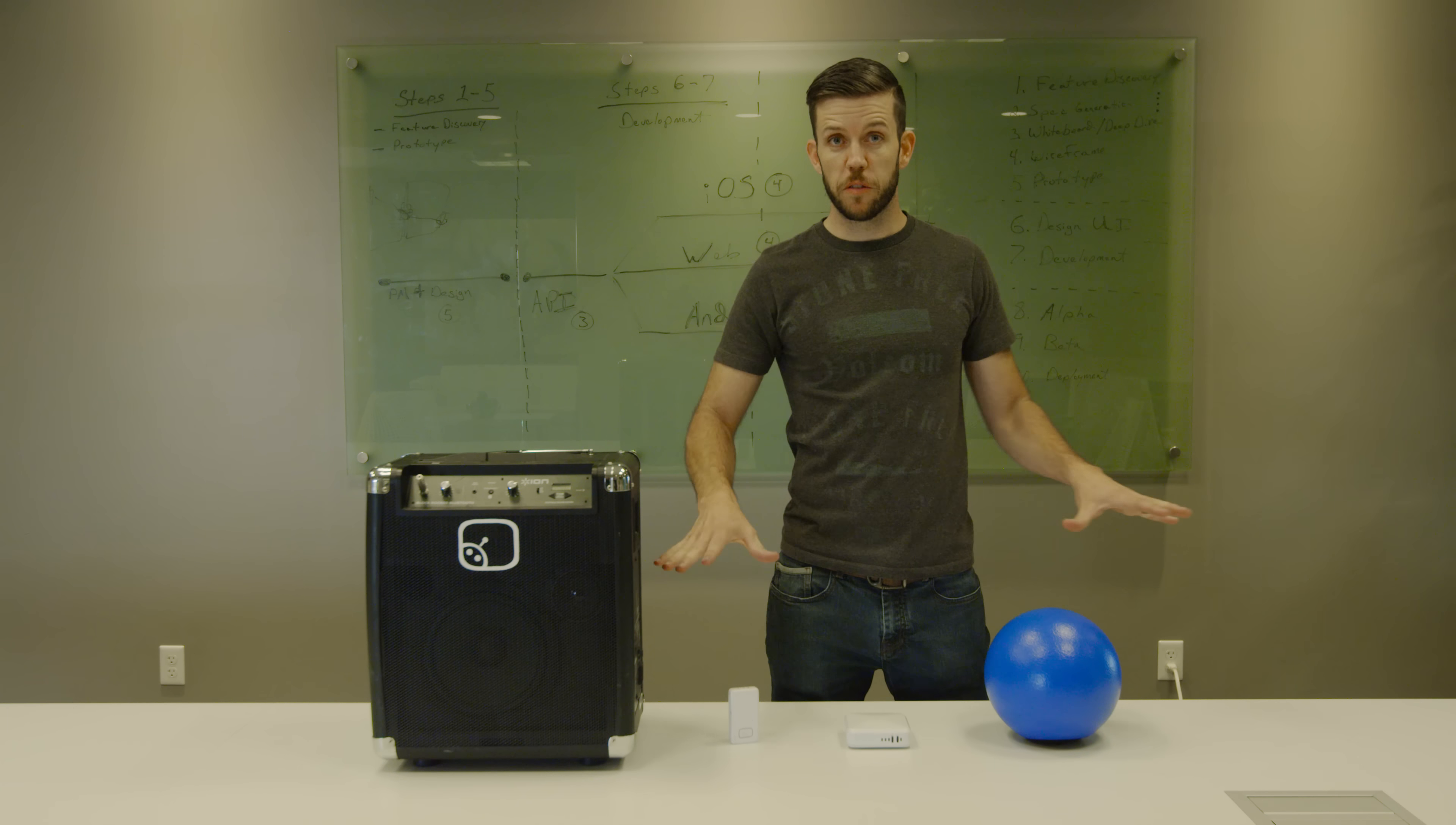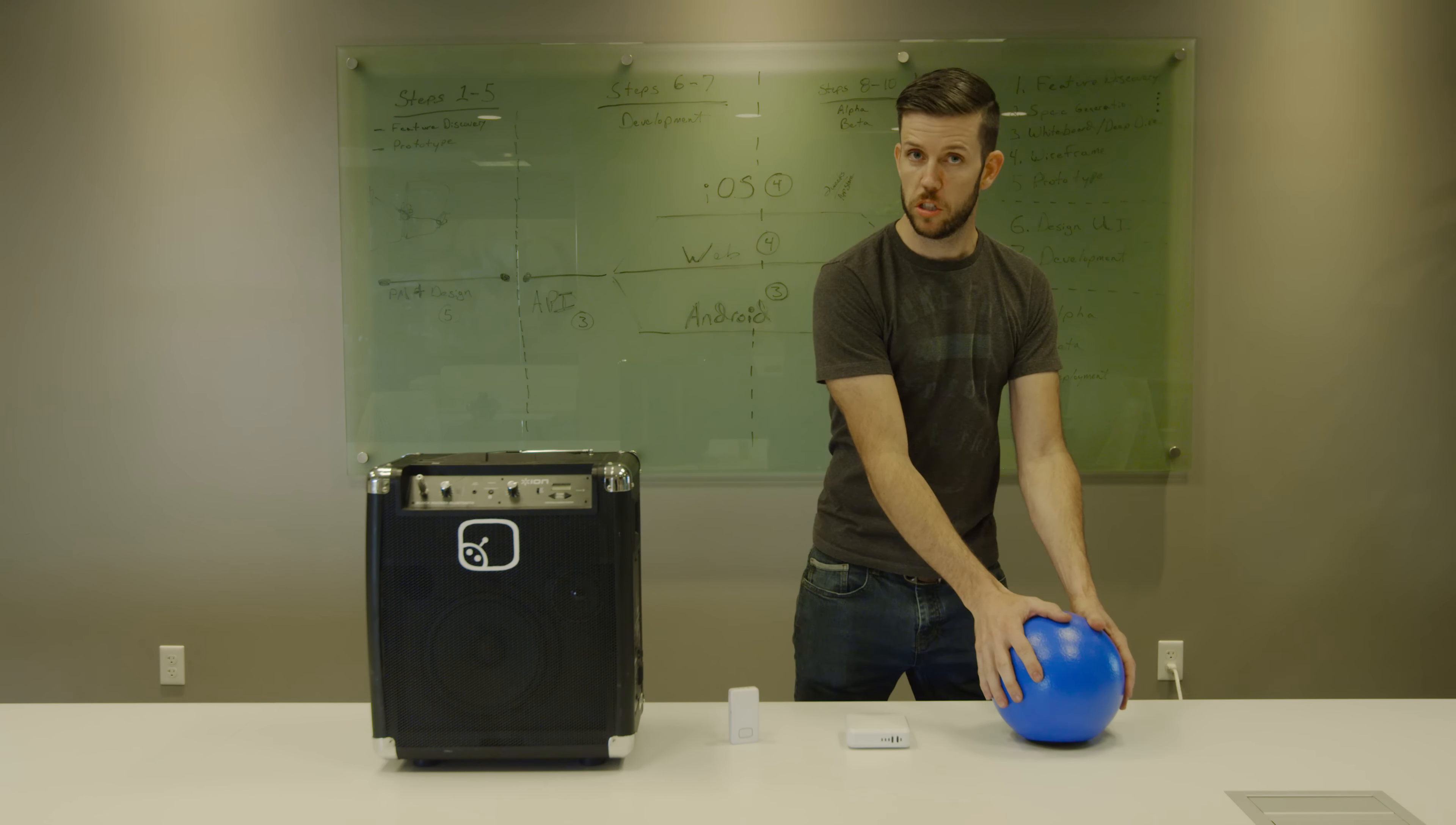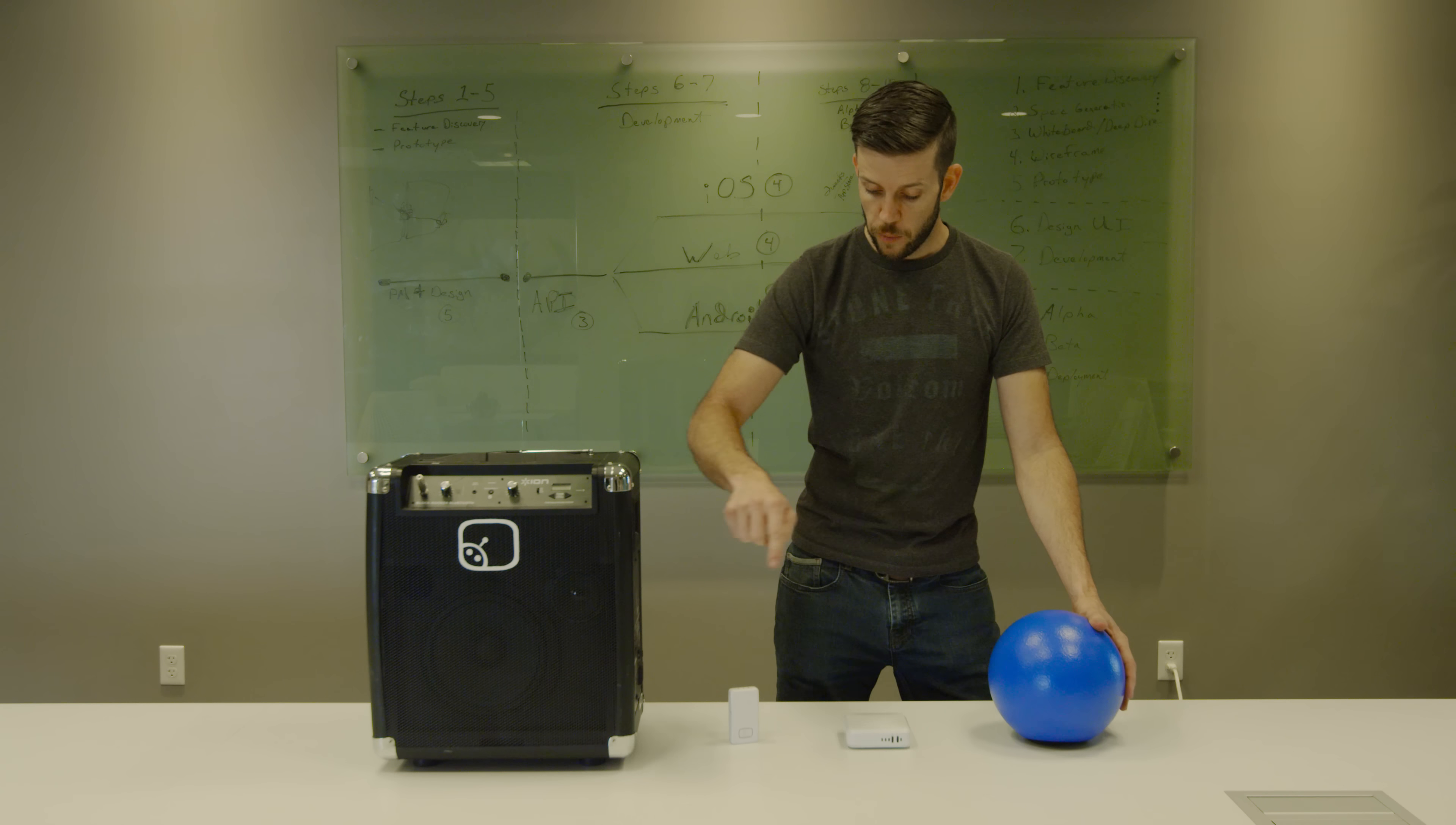So the system is comprised of three main components. We have the ball, which is just the enclosure, we've got the receiver, and we've got the microphone.